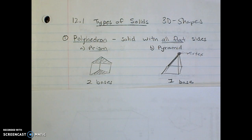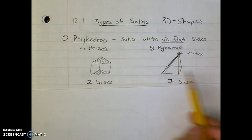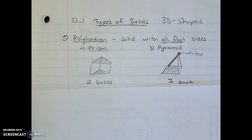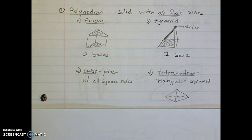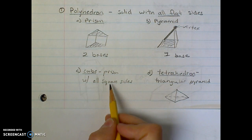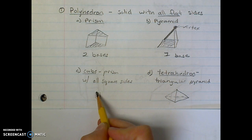So the main difference is two bases versus one base. A few other types of polyhedrons would be a cube, a prism with all square sides. You would know that the cube is a cube because every single side would have a little tick mark on it to show you that it's the same length.